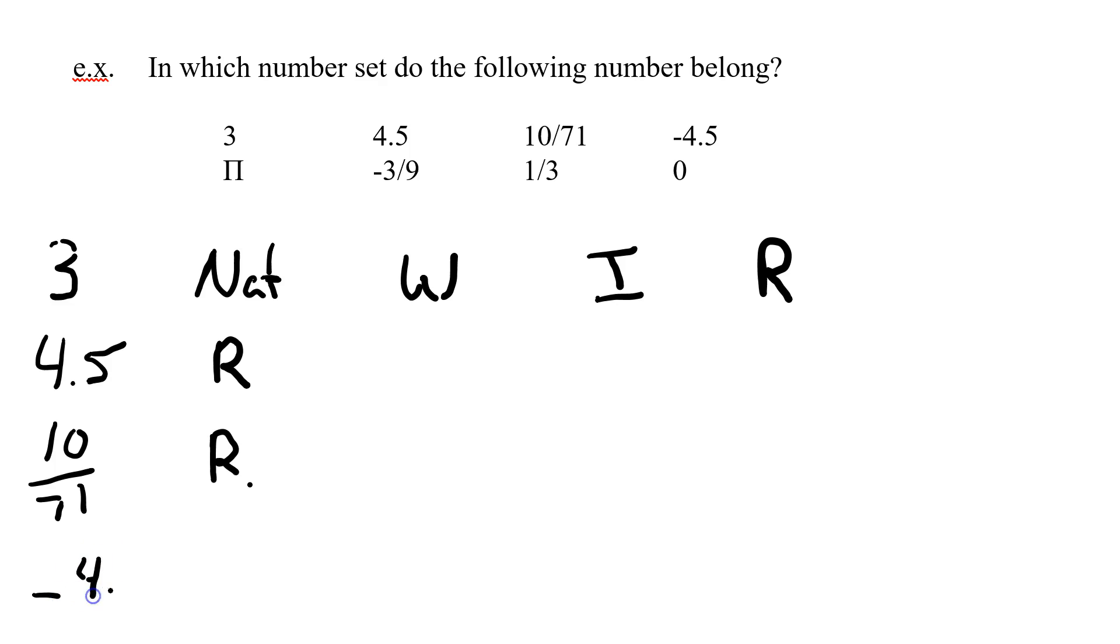Negative 4.5. Well, the negative sign is the big key here. Negative sign means it can only be integer or rational. Because a decimal can't be an integer. It must be a rational.